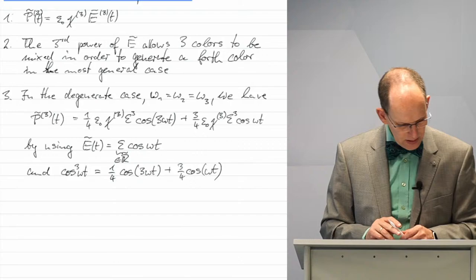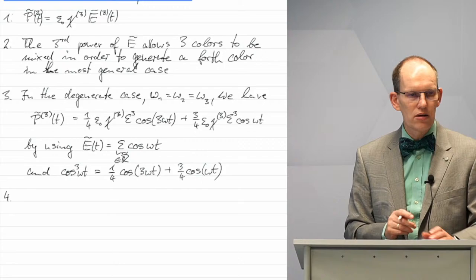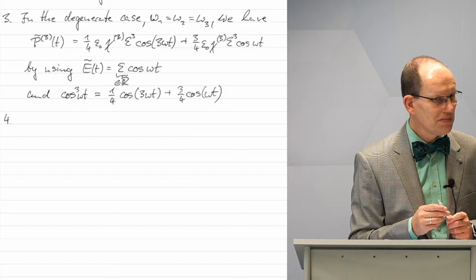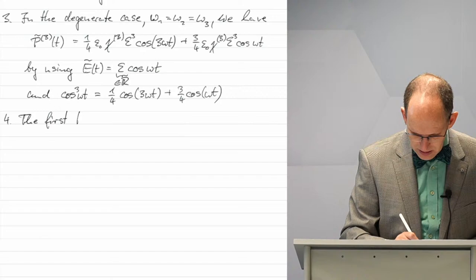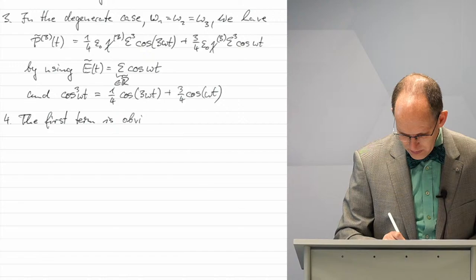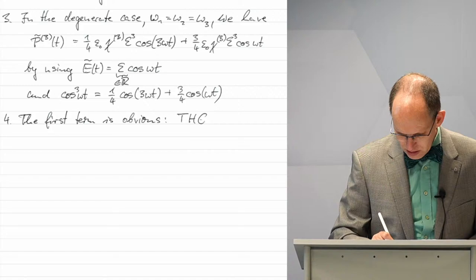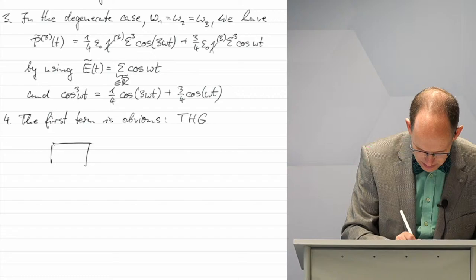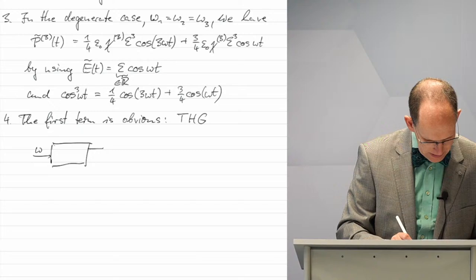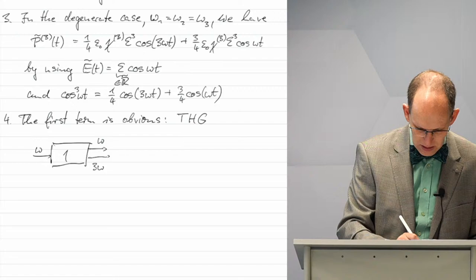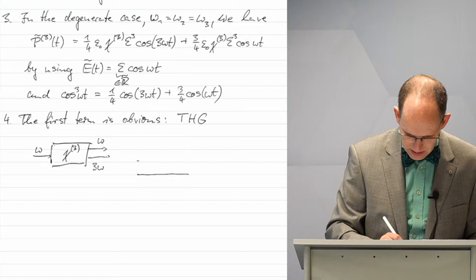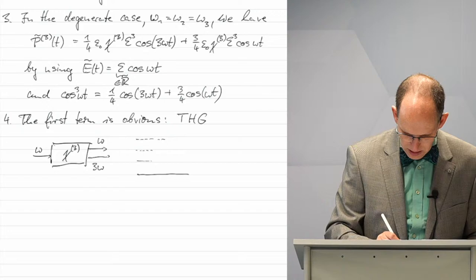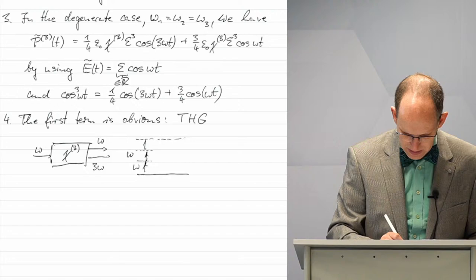The first term, at 3ω, is obviously third harmonic generation: three photons of frequency ω are destroyed and one photon at 3ω is created. This is directly analogous to second harmonic generation but involving three input photons.